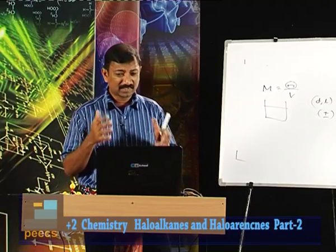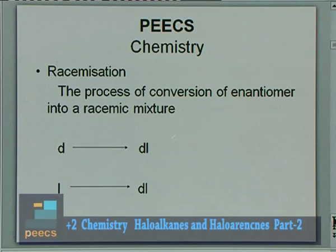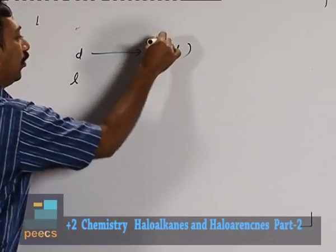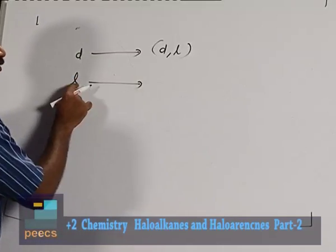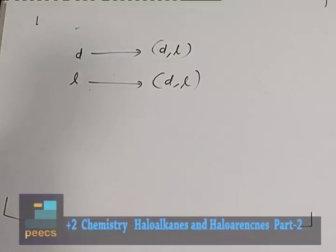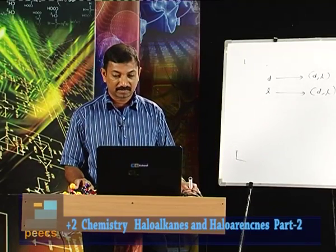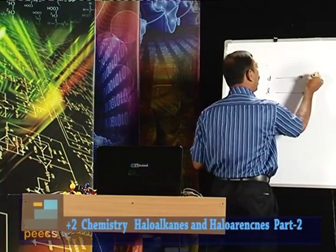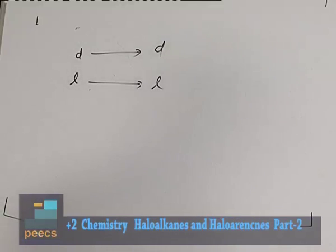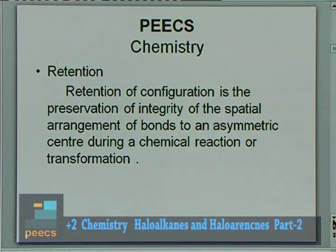Racemization is the process of conversion of an optically active dextro or levo isomer into a racemic mixture. For example, if a beaker contains 100 dextro molecules and after a particular process 50 molecules are converted to levo, it becomes a racemic mixture. Similarly levo can tend to dextro, forming a d,l mixture. Retention means keeping the configuration as such — dextro remains dextro and levo remains levo after a reaction. Retention of configuration is the preservation of the spatial arrangement of bonds around an asymmetric center during a chemical reaction.